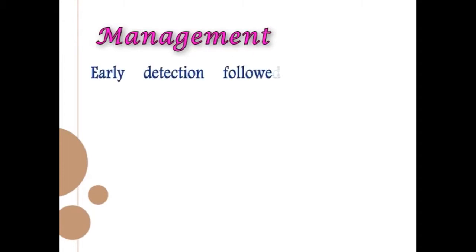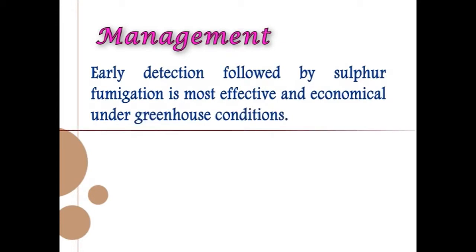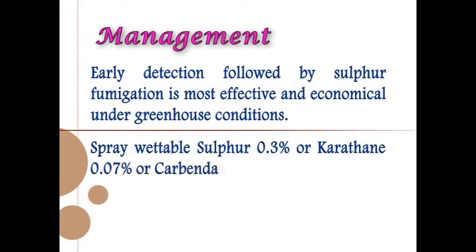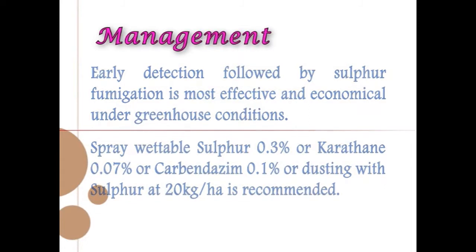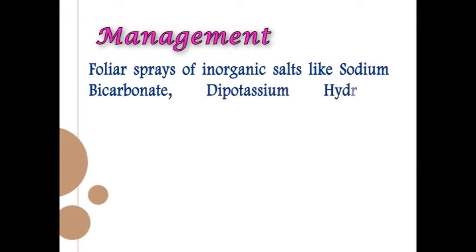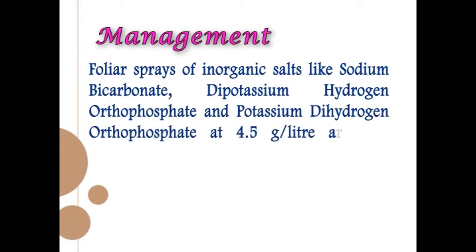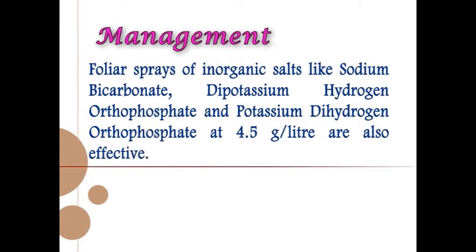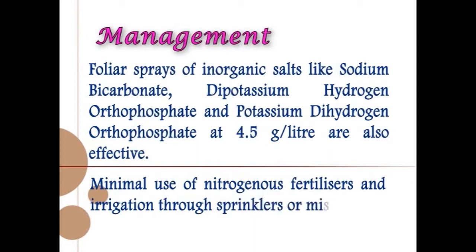Early detection followed by sulfur fumigation is most effective and economical under greenhouse conditions. Spray wettable sulfur at 0.3%, or carbendazim at 0.07%, or carbendazim at 0.1%, or dusting with sulfur at 20 kg per hectare is recommended. Foliar sprays of inorganic salts like sodium bicarbonate, dipotassium hydrogen orthophosphate, and potassium dihydrogen orthophosphate at 4.5 g per litre are also effective. Minimal use of nitrogenous fertilizers and irrigation through sprinklers or mist sprayers is advised.